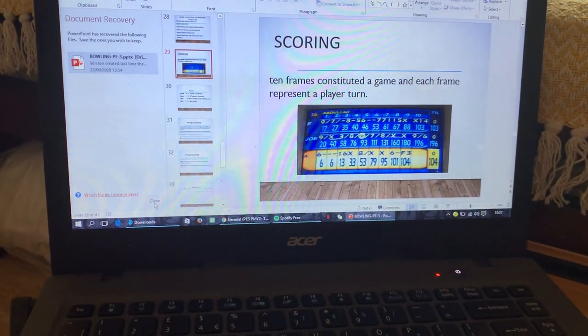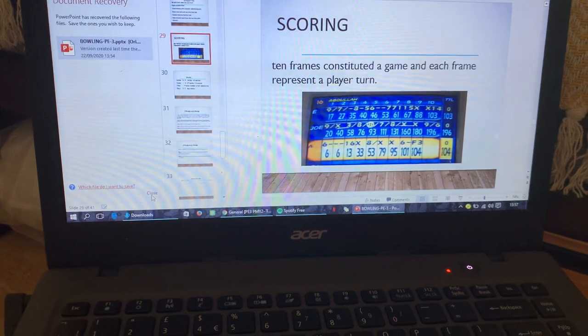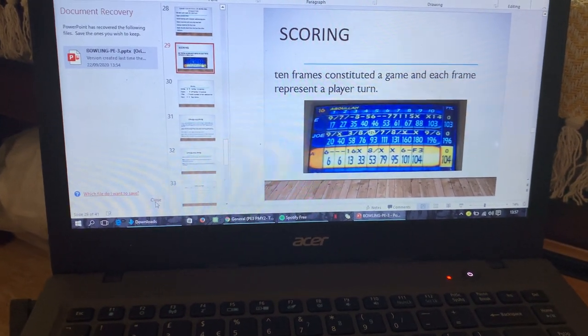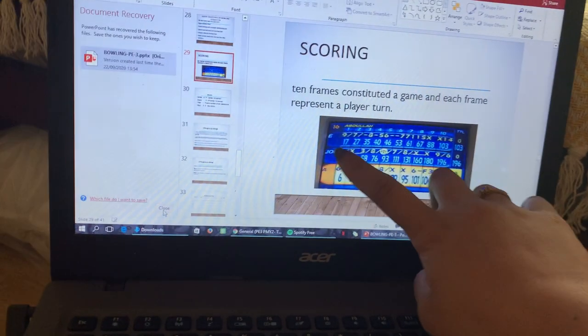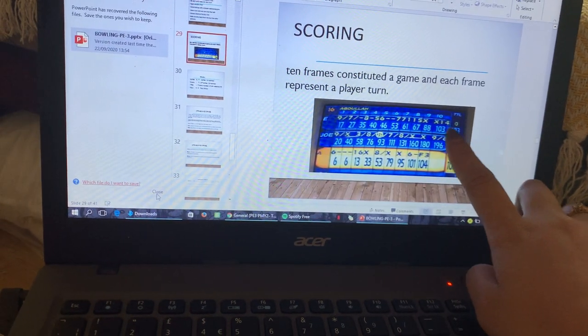So next, we will proceed to the scoring. For the scoring, we have 10 frames for each game. So these frames contain boxes. These boxes, all the boxes, are equivalent to two attempts. And then this is where your score appears, and this will be your final score.